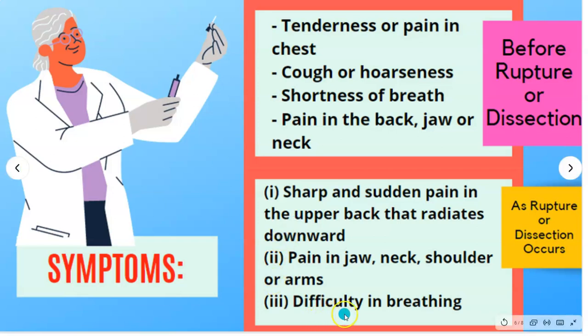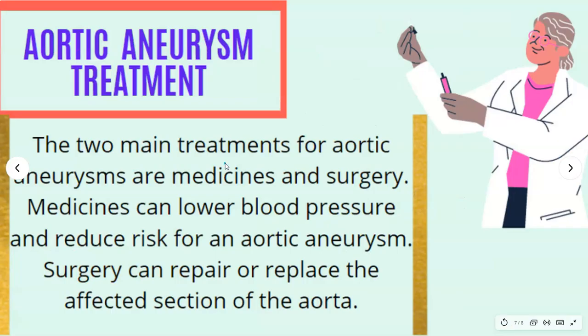Here are the two treatments for aortic aneurysm in general. An aortic aneurysm can be either a thoracic aortic aneurysm or an abdominal aortic aneurysm. If you want to specify the type, you can say ruptured aortic aneurysm or aortic dissection.